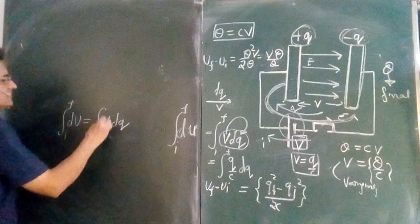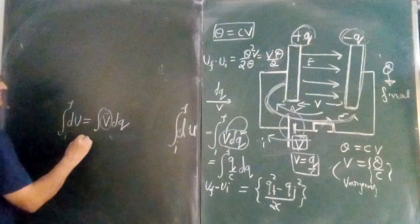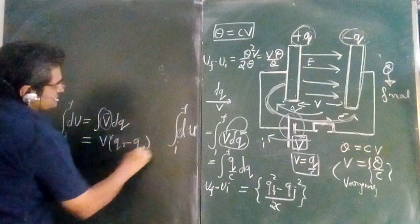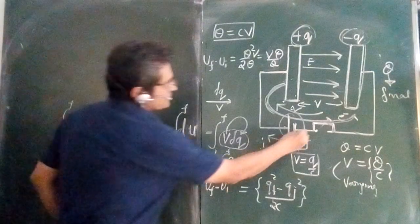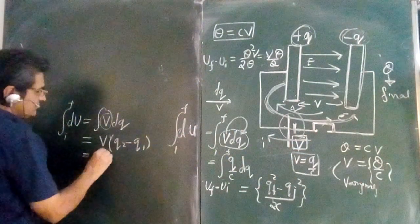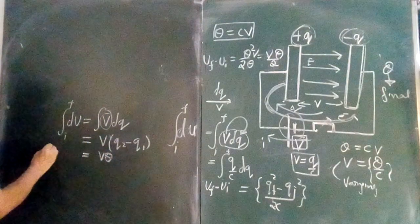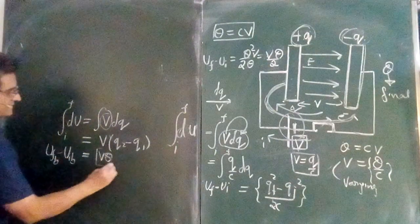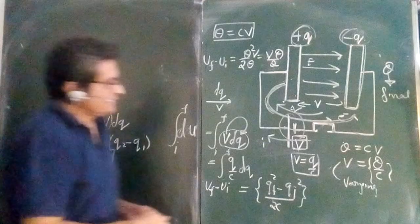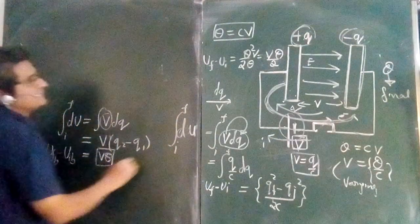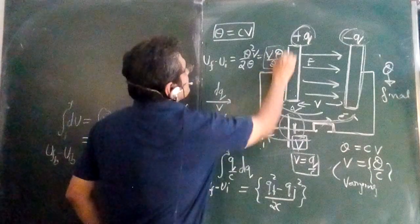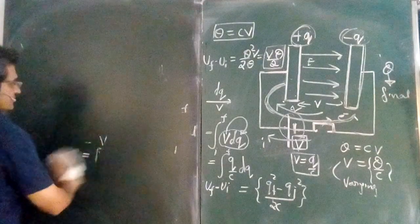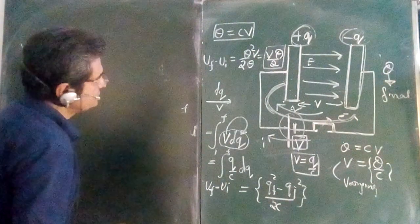Since battery voltage is constant, the energy lost by the battery is simply V times (Q2 minus Q1) — that is VQ, the total charge which has flowed. So the change in energy of the battery is VQ. But the energy stored in the capacitor is only VQ upon 2. So we ask: where has the other half of the energy gone?